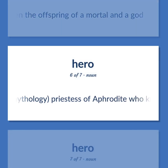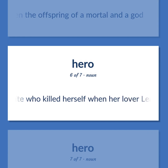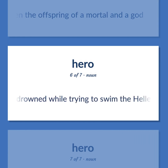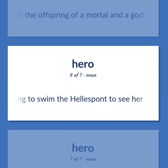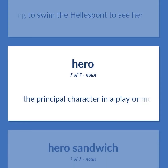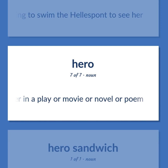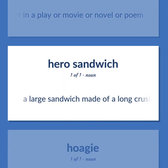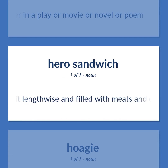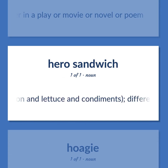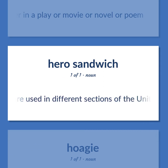Hero: Greek mythology — priestess of Aphrodite who killed herself when her lover Leander drowned while trying to swim the Hellespont to see her. Also: the principal character in a play, movie, novel, or poem. Also (sandwich): a large sandwich made of a long crusty roll split lengthwise and filled with meats and cheese, and tomato, onion, lettuce, and condiments. Different names are used in different sections of the United States.